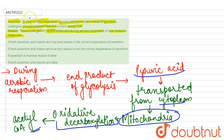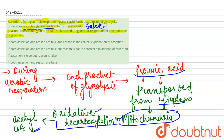Reading the assertion again, it states that pyruvic acid undergoes a phosphorylation reaction to form acetyl coenzyme A — but it actually undergoes oxidative decarboxylation. Therefore, the assertion is false.